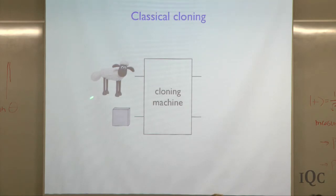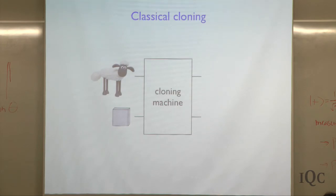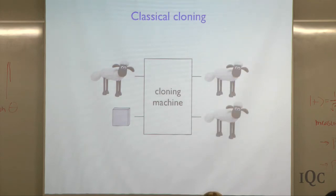So we have a clay model of a sheep and we would like to have two of them. What we would imagine is that we have this cloning machine which, no matter what you put in, it not only knows how to build sheep but it knows how to build cows and pigs and anything you might like to clone, and it will make two of them. So in this particular case, if you put in the sheep, you get out two sheep. This is what I mean by a cloning machine.